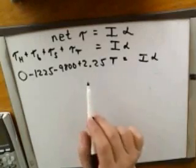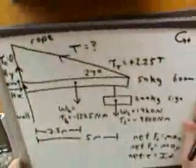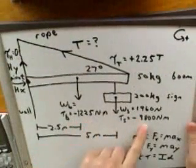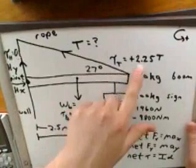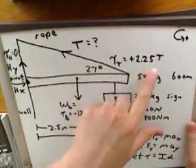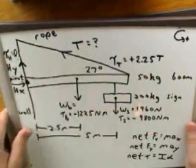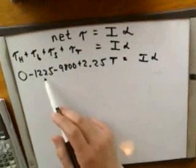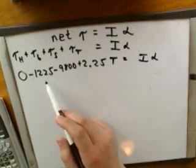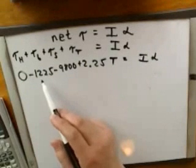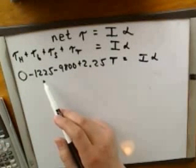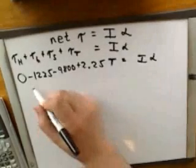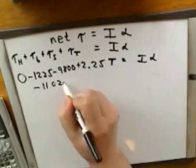You can see all these numbers match what we got earlier: the torque of the boom was negative 1225, the torque of the sign was negative 9800, the torque from the tension force was positive 2.25 times T, and the torque from the hinge was 0. I just plugged those into our equation. Now let's do this calculation: negative 1225 minus 9800 equals negative 11025.